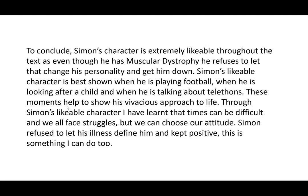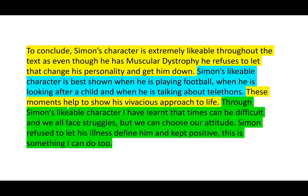Hopefully your conclusion looks a little bit like this. Using a different sentence starter: to conclude, Simon's character is extremely likable throughout the text. Even though he has muscular dystrophy, he refuses to let that change his personality and get him down. Simon's likable character is best shown when he is playing football, looking after a child, and talking about telethons. These moments help to show his vivacious approach to life. Through Simon's likable character, I have learned that times can be difficult and we all face struggles, but we can choose our attitude. Simon refused to let his illness define him and kept positive — this is something I can do too. The yellow is the argument, the blue is the main points, and the green is the reflection formed from writing about Simon's likable character.